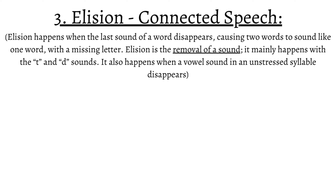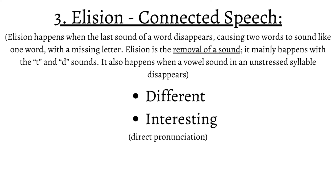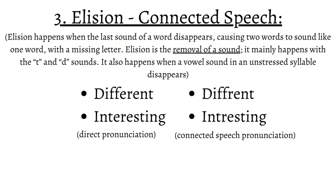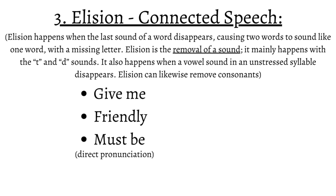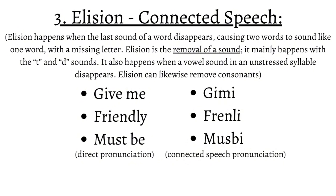Elision also happens when a vowel sound in an unstressed syllable disappears. For instance, 'different' and 'interesting' can be pronounced without the central vowels. Additionally, native English speakers also remove other consonants and can connect two words into one. Some examples are 'give me,' 'friendly,' 'must be.' With removed letters, the pronunciation will be 'give me,' 'friendly,' 'must be.'